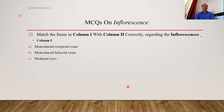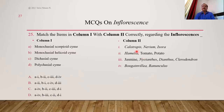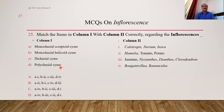Matching type question — different types of cymose inflorescence with their examples. Calotropis, Nerium, Ixora show polychasial cyme; Hamelia, tomato, potato show monochasial helicoid cyme; Jasmine, Nyctanthus, Dianthus, Clerodendron are examples of dichasial cyme; Bougainvillea, Ranunculus are examples of monochasial scorpioid cyme. After matching, the right answer is option C.